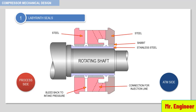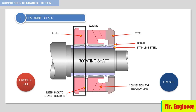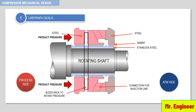You can see in this example that the labyrinth is divided into several sections. The first section is the packing, which is exposed to process pressure. A port or lantern is used to bleed off gas after the first section. This port is connected to the compressor intake.